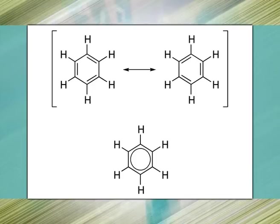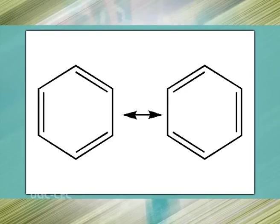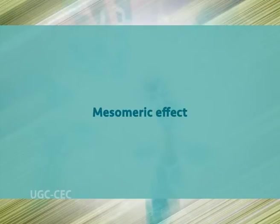The classical example of resonance is provided by the pi bonding system of benzene. Benzene is a six-membered ring composed of six sp² hybridized carbon atoms in a plane, sharing six pi electrons. It can be represented by the Kekulé structure, which suggests an alternating single bond–double bond pattern.